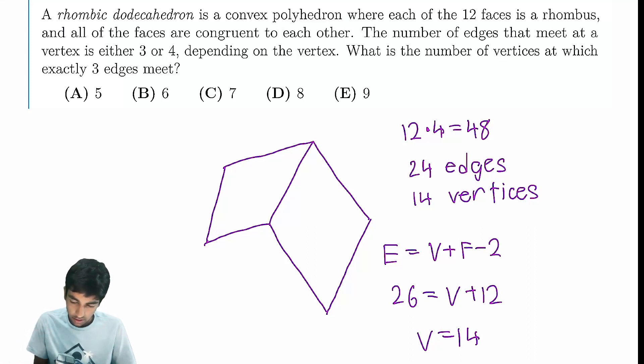So now we have this condition here. The number of edges that meet at each vertex is 3 or 4. What is the number of vertices? We have 14 vertices and 24 edges. So it's like we're adding up, we look at this vertex. It has these edges extruding from it. Let's consider one vertex in particular.